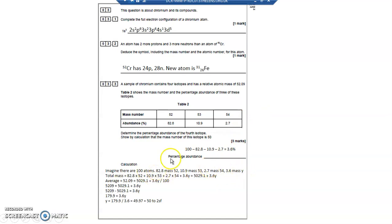So the total mass is 82.8 particles times 52. That's the mass of those. 10.9 particles of mass 53, multiply those two together. 2.7 times 54, that's the mass of those particles. And 3.6 particles out of the 100 have got mass Y, 3.6Y. The total mass is, therefore, they add everything up, it's 5,029.1, add 3.6Y. That's the total mass.